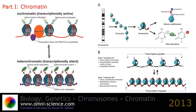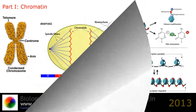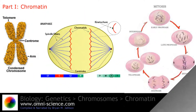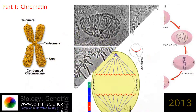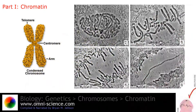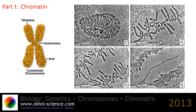As the cell prepares to divide — that is, enters mitosis or meiosis — the chromatin packages more tightly to facilitate segregation of the chromosomes during anaphase. During this stage of the cell cycle, this makes the individual chromosomes in many cells visible by optical microscope. In general terms, there are three levels of chromatin organization.